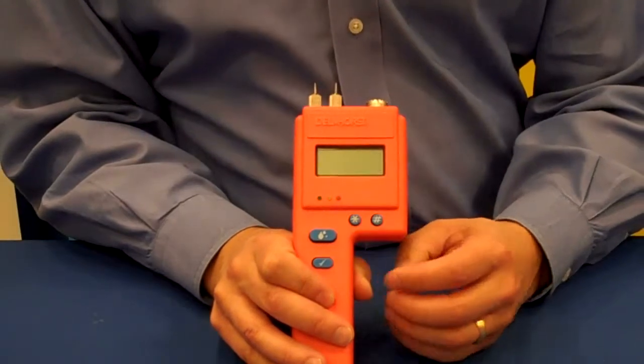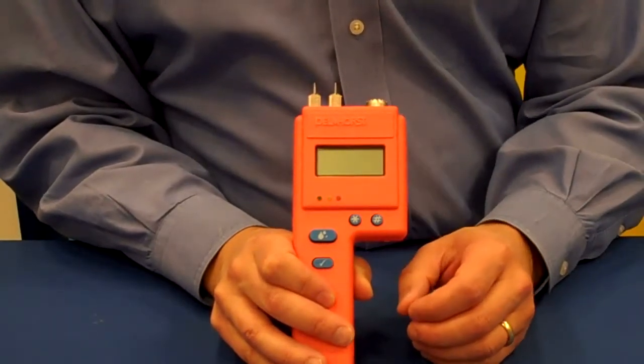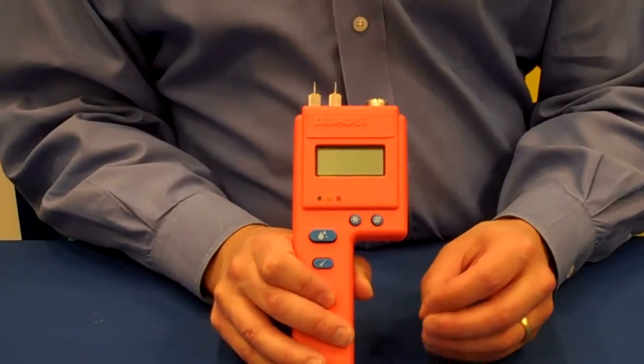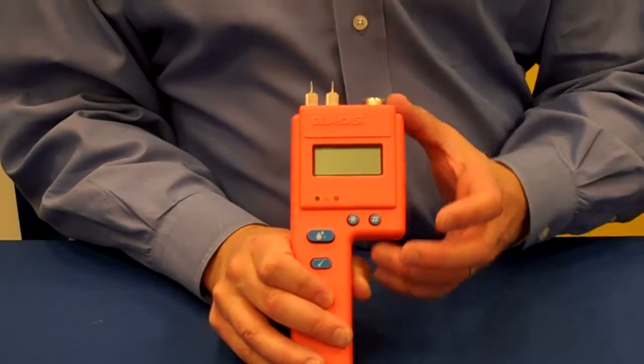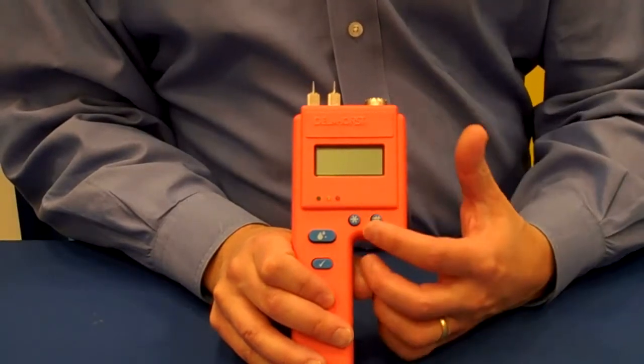Scale number three is a scale that's calibrated for drywall. So when you're checking your drywall, you get an actual moisture content instead of a relative reading. Delmhorst is the only manufacturer that offers the drywall scale.